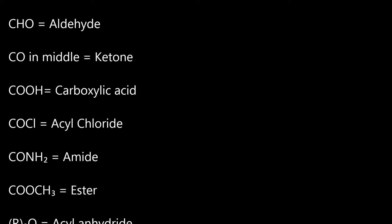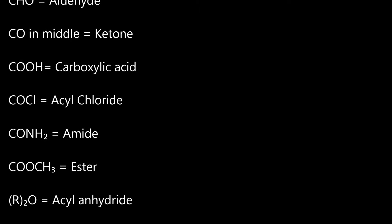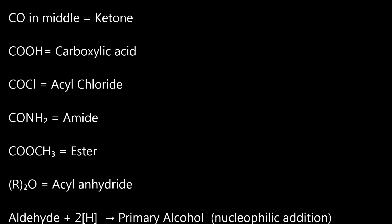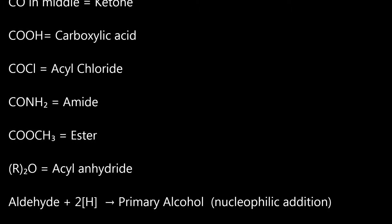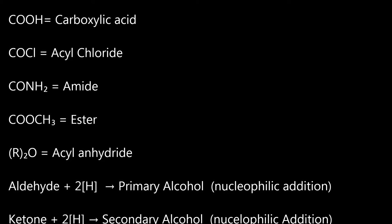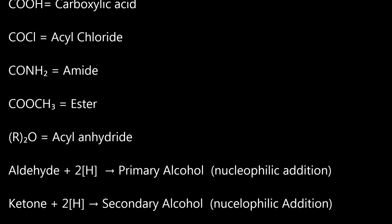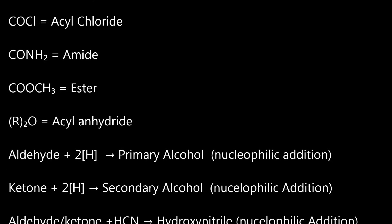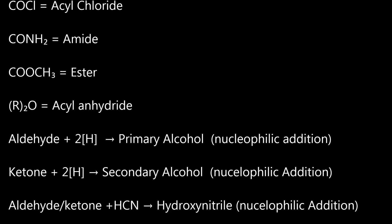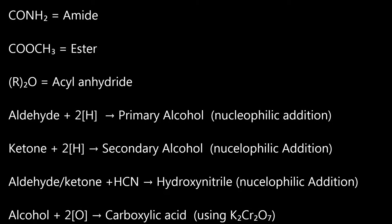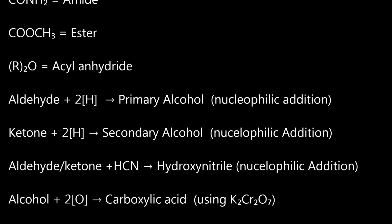Aldehyde plus 2 hydrogens goes to primary alcohol by nucleophilic addition. Ketone plus 2 hydrogens goes to secondary alcohol by nucleophilic addition. Aldehyde or ketone plus HCN goes to hydroxynitrile by nucleophilic addition. Alcohol plus 2O goes to carboxylic acid using potassium dichromate.